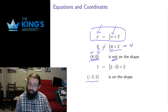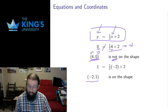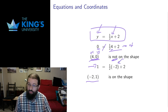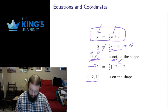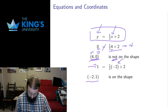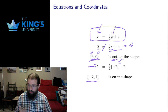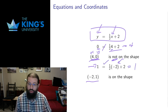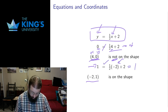However, if I try the point (-2, 1), I replace y with 1 and x with negative 2. The left side is 1. One half times negative 2 is negative 1, and negative 1 plus 2 equals 1. That works, so this point is on the shape.